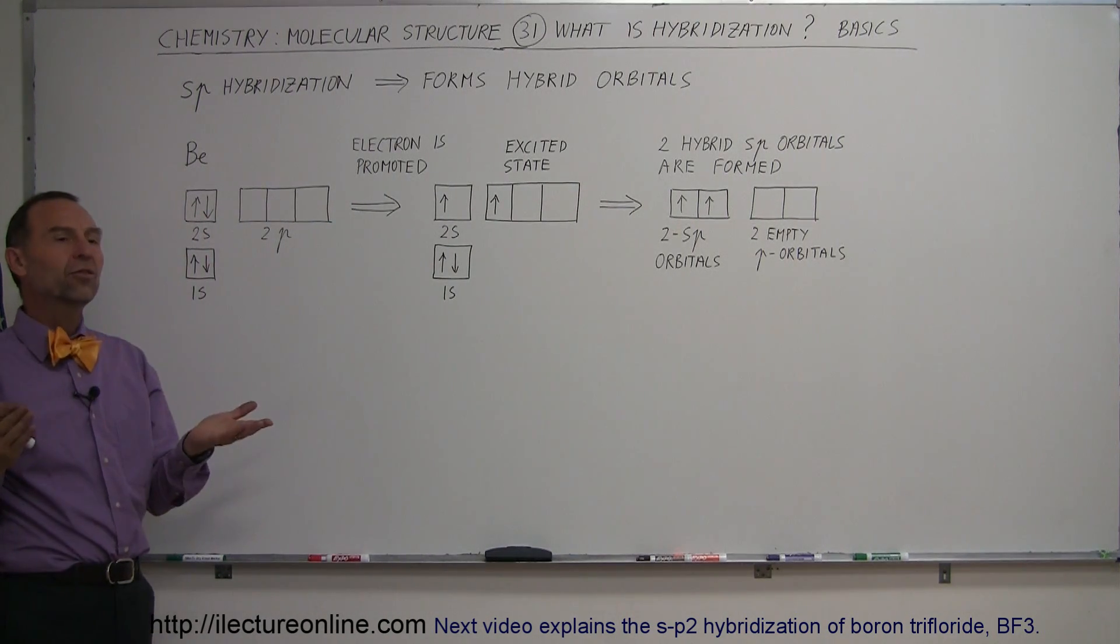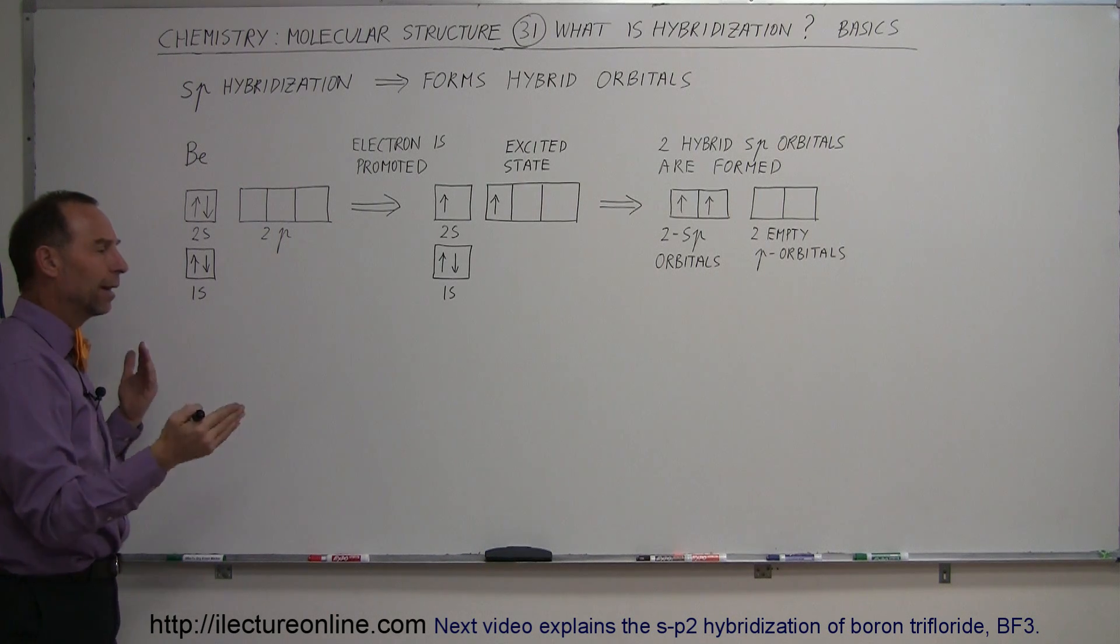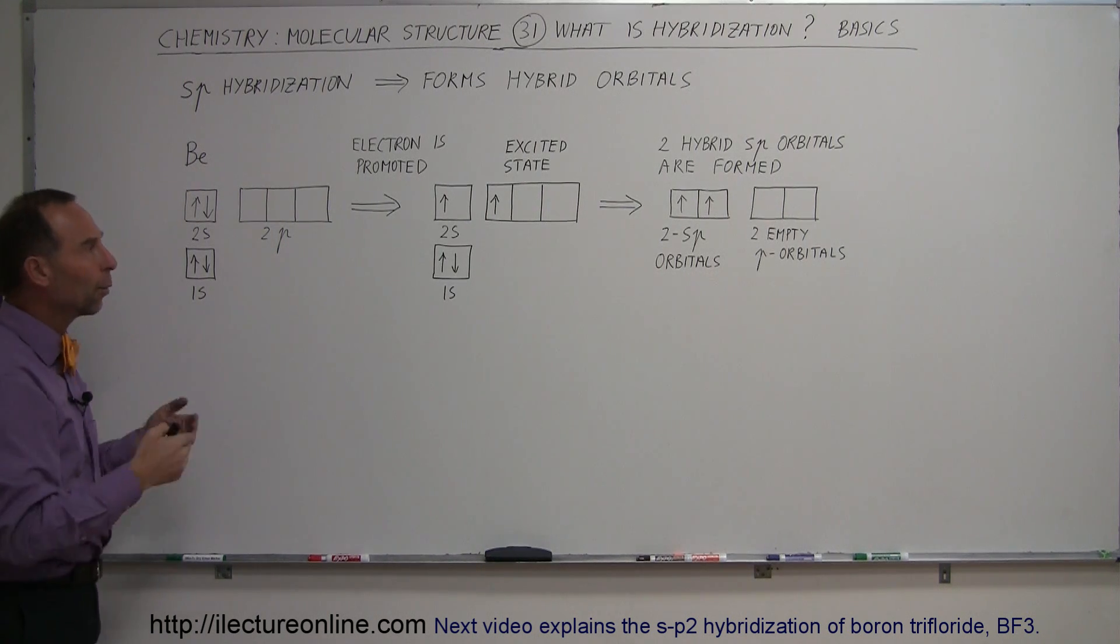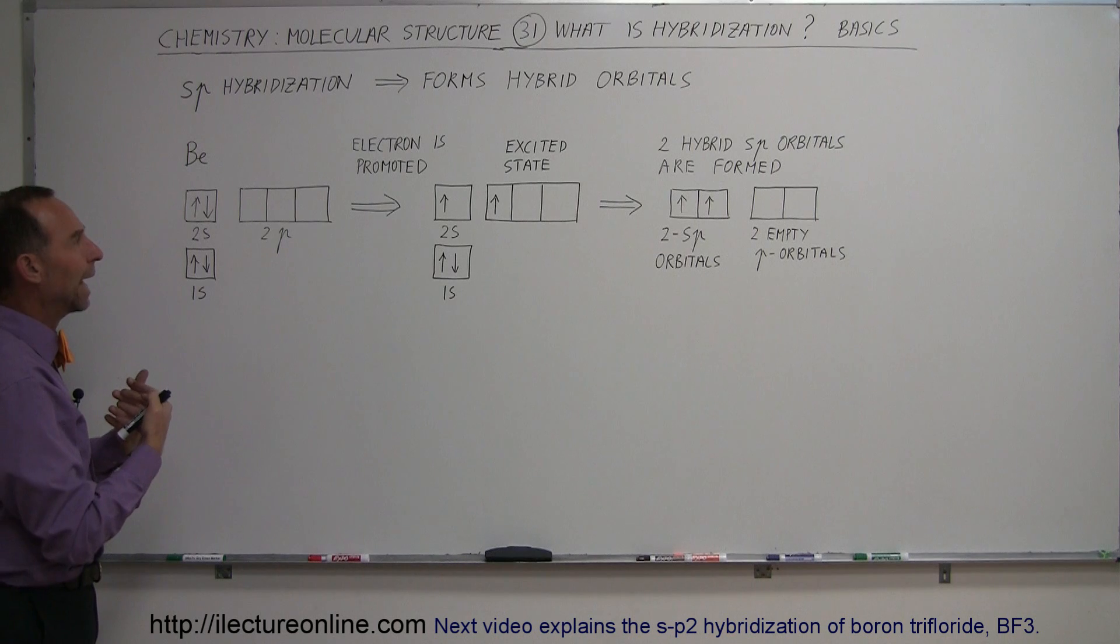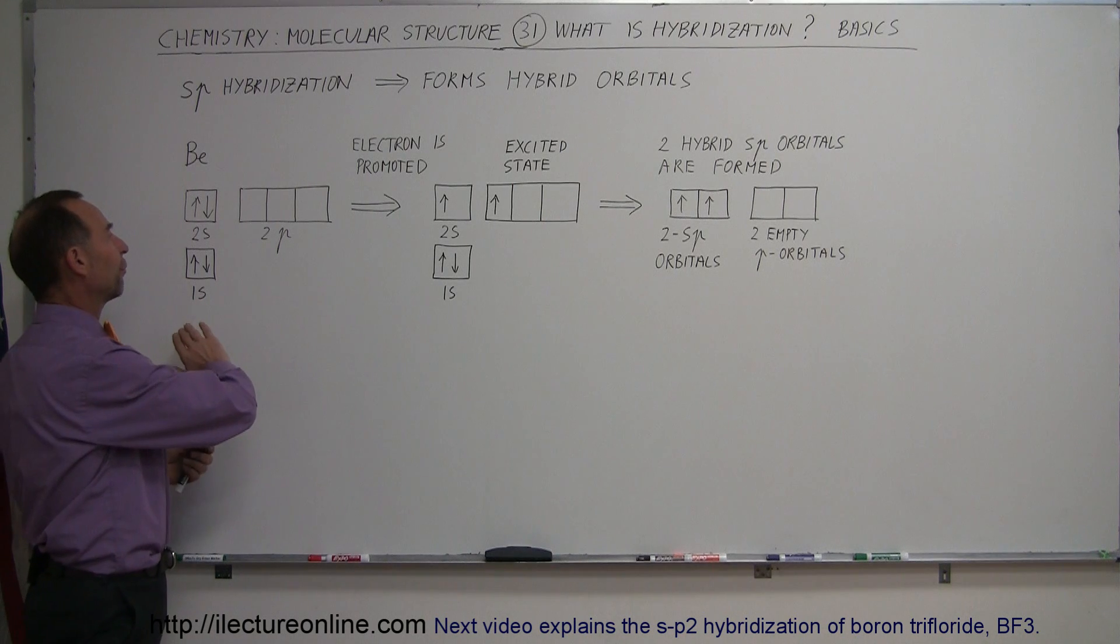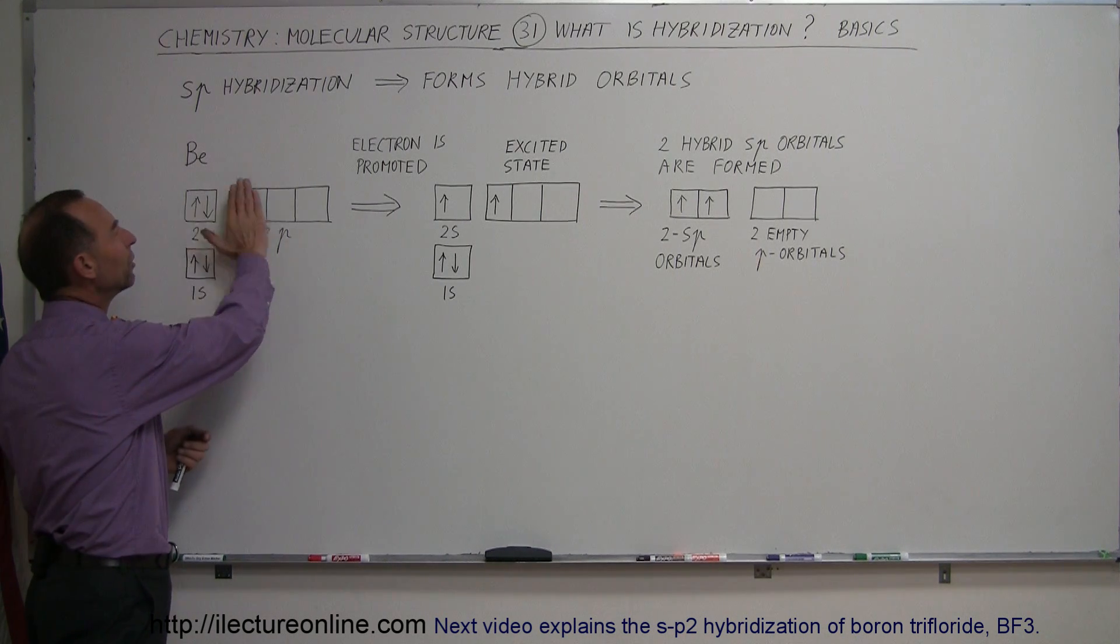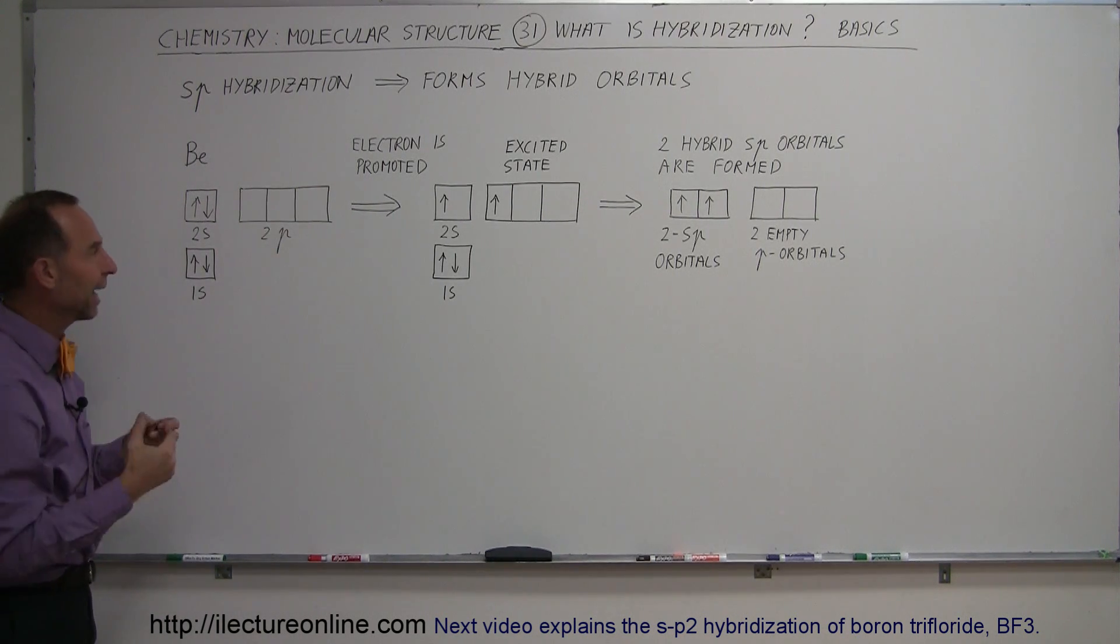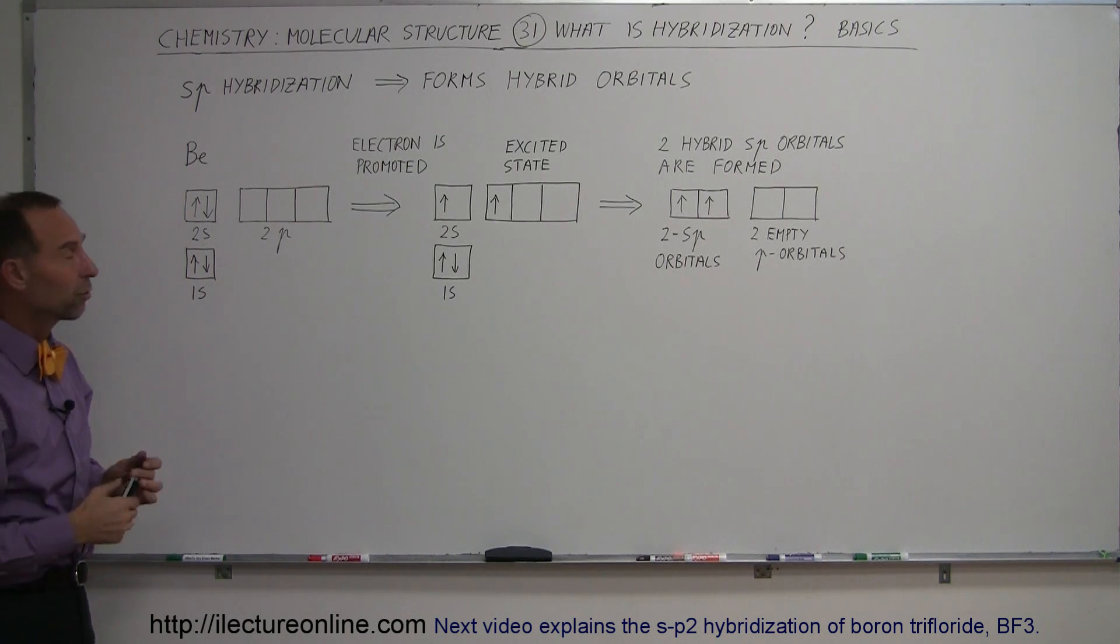So why would in some cases the atoms make sigma and pi bonds and why in some cases will the atoms go through the hybridization process? And the answer is pretty clear if you take a look at it. What we looked at before when we did sigma and pi bonds all of the orbitals were already filled, had at least one or two electrons in them.